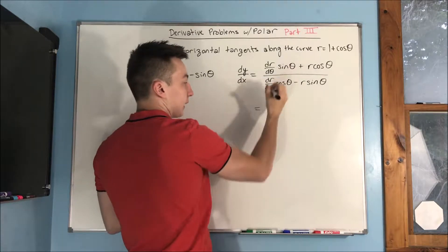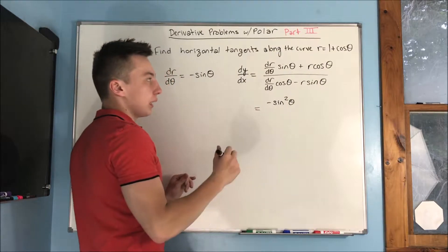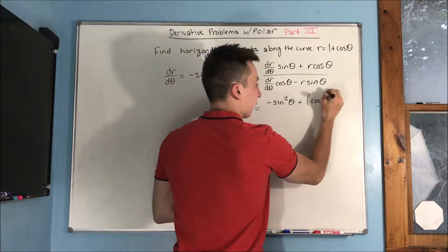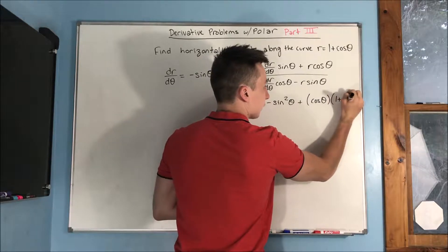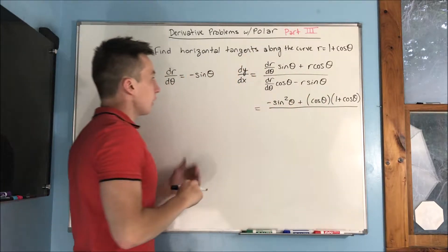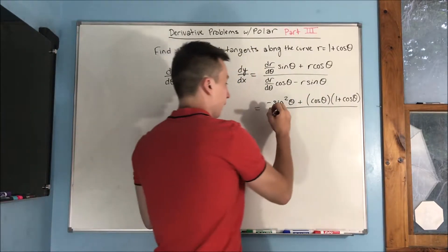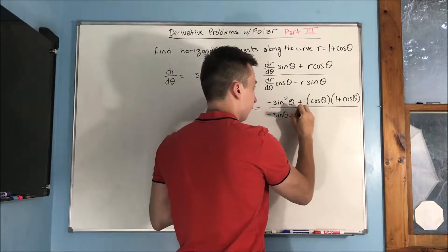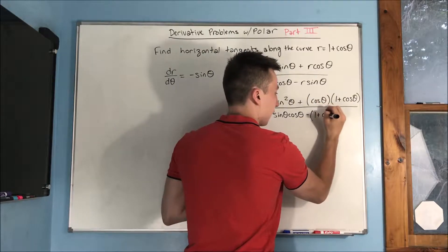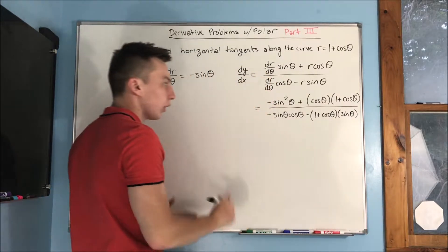Plugging in, the numerator is going to be negative sine squared theta, plus r times cosine theta, which is cosine theta times (1 plus cosine theta). The denominator will be dr/dθ times cosine theta — that's negative sine theta cosine theta — minus r, which is (1 plus cosine theta), times sine theta.